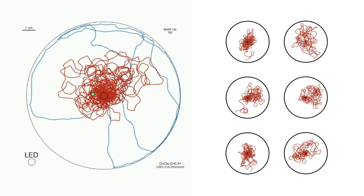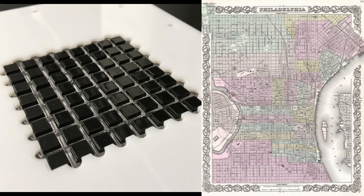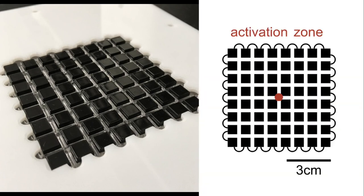We wondered whether the flies would be able to execute local searches within a constrained environment, where they cannot freely choose the timing, location, or angle of their turns. To this end, we constructed a maze-like arena we call Fly-a-delphia, because it resembles the street grid of Philadelphia. In this chamber, flies are restricted to walking down the narrow corridors separated by the black blocks.